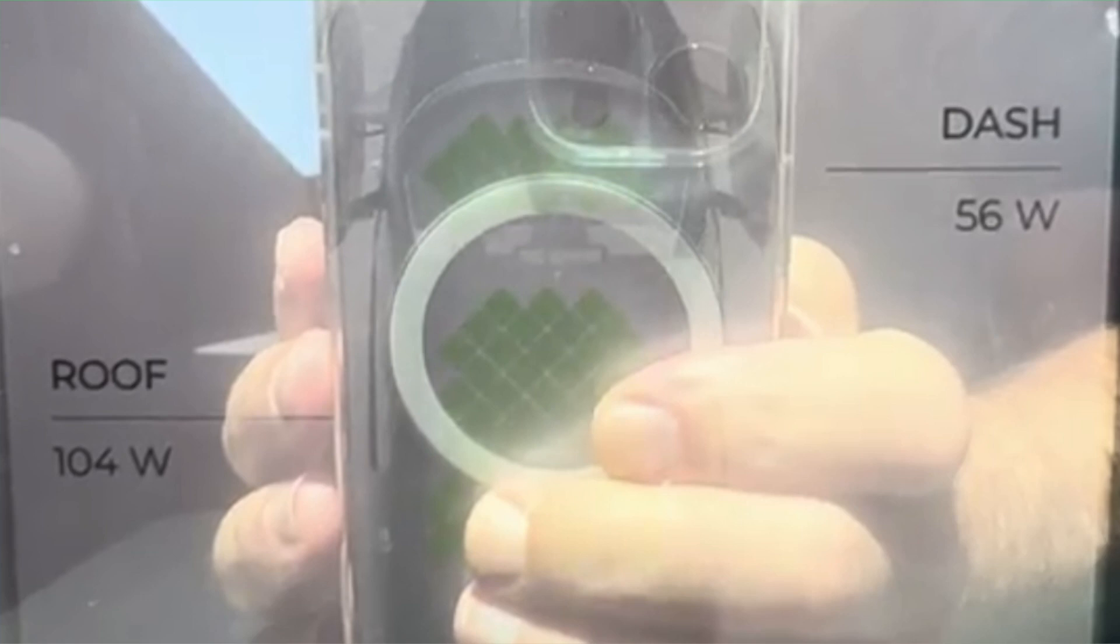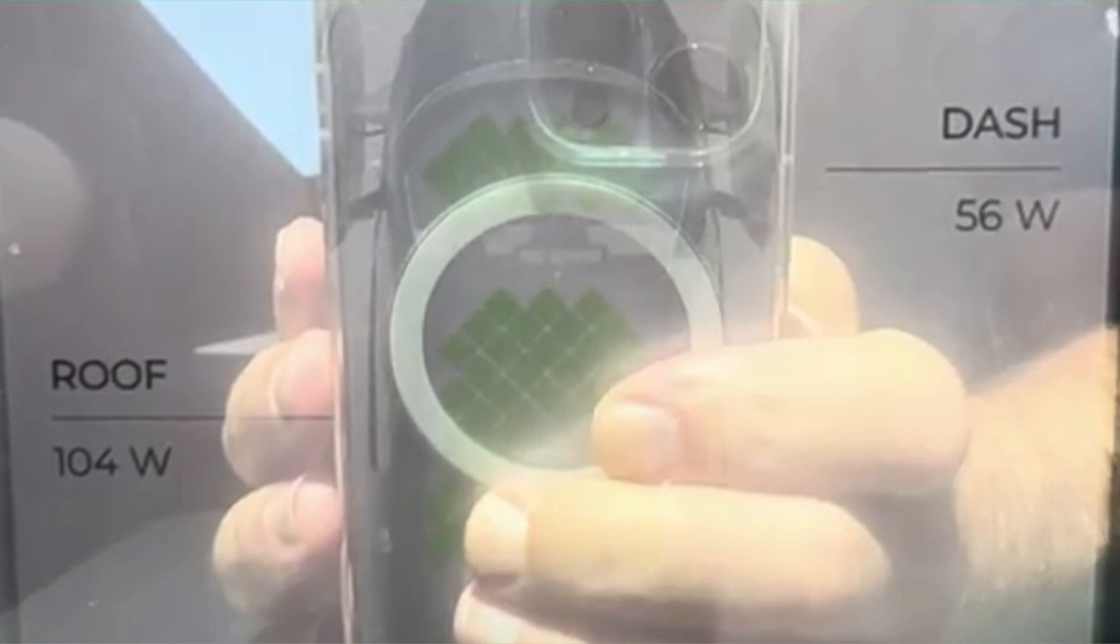You can see on the left, it says the roof is bringing in 104 watts, and the dash is bringing in 56 watts. And then if you really look close, you can see they're lit up in green. So that's the way we can expect it to look. And it's showing us, yes, we're getting power here and here.